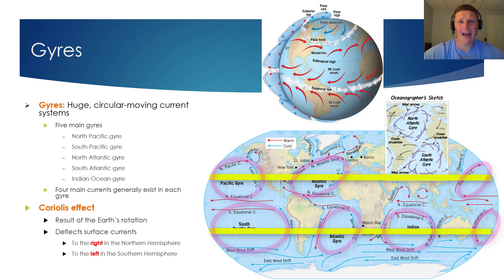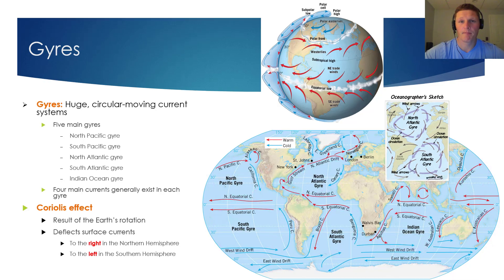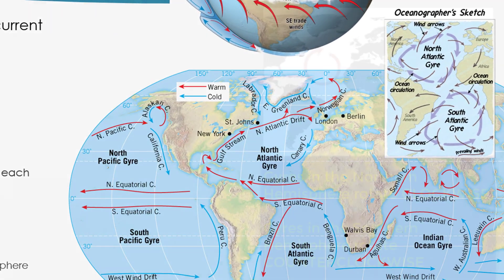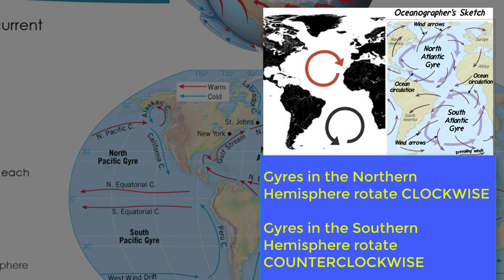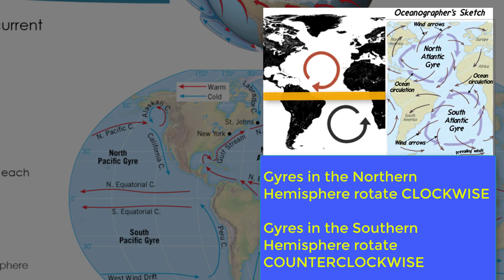You might be wondering what happens inside of the gyres. Within the center of these circular moving current systems, there are no well-defined currents. As shown in the image, subtropical gyres in the northern hemisphere rotate clockwise, whereas subtropical gyres in the southern hemisphere rotate counterclockwise.